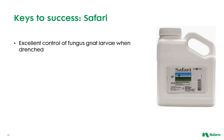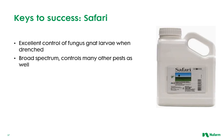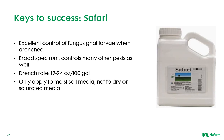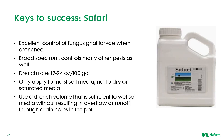Safari provides excellent control of fungus gnat larvae when drenched. In addition, it's broad-spectrum and controls many other pests as well. The drench rate for Safari is 12 to 24 ounces per 100 gallons. Only apply to moist soil media, not to dry or saturated media. Use a drench volume that is sufficient to wet soil media without resulting in overflow or runoff through drain holes in the pot or flat.